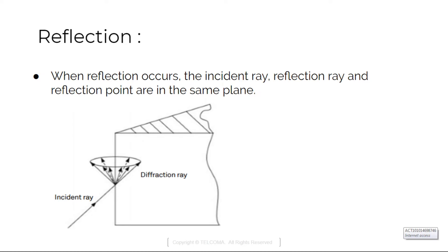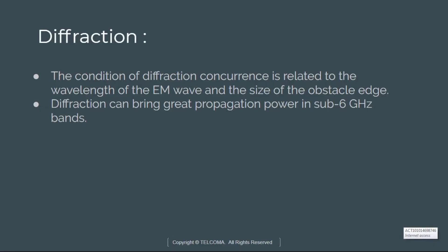Next we have diffraction. The condition for diffraction occurrence is related to the wavelength of the EM wave and the size of the obstacle edge. It can bring great propagation power in the sub-6 GHz band. However, when the frequency band is 10 GHz or higher, the number of edges that can produce diffraction is reduced.